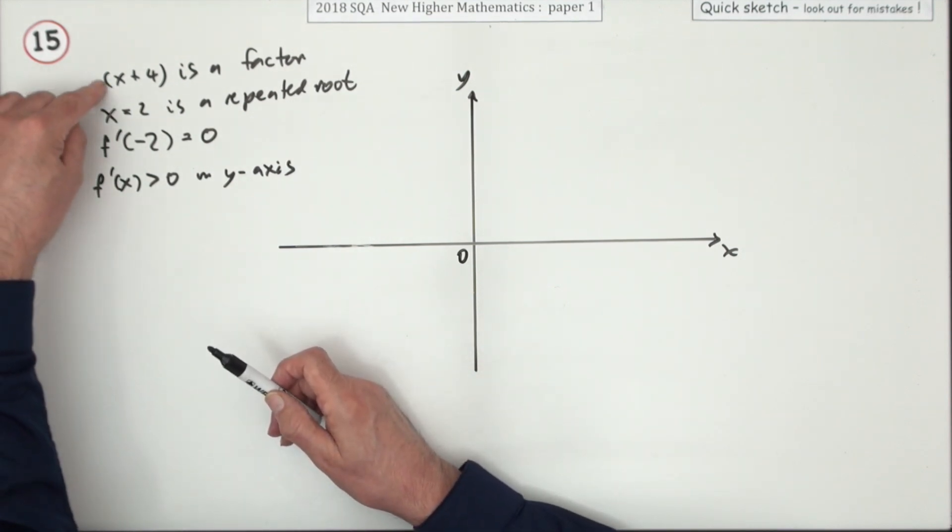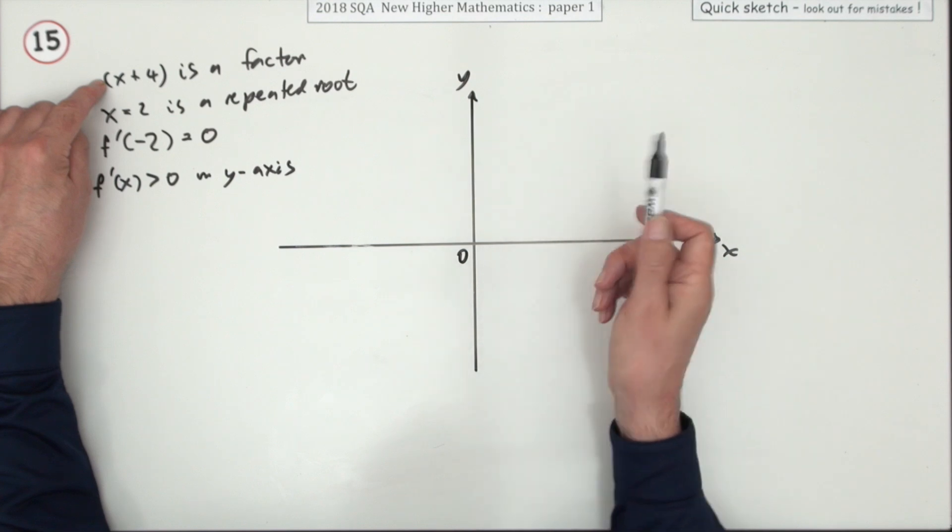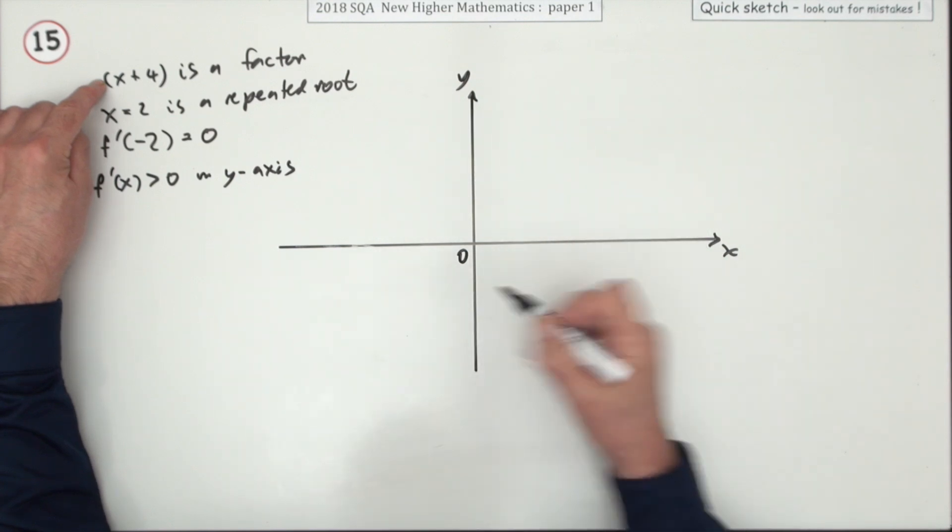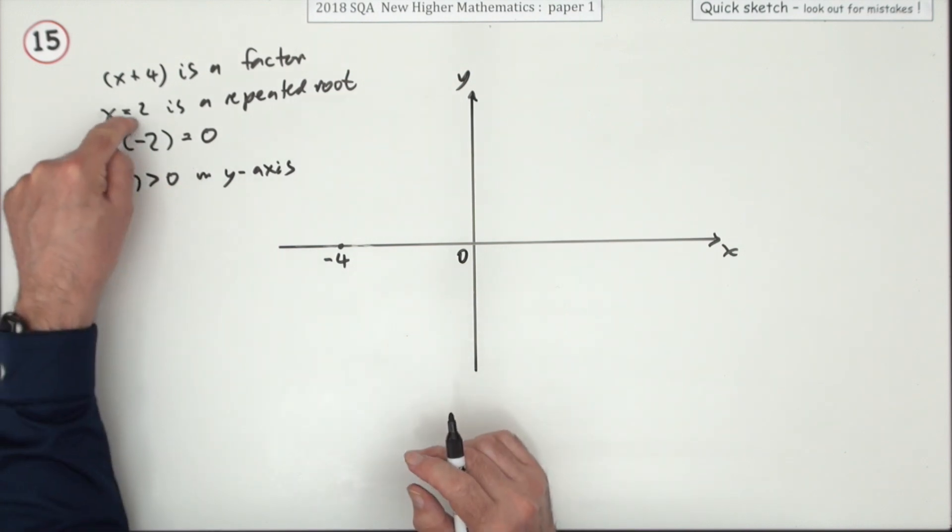x plus four is a factor. So if you were solving that equal to zero to find where it cuts the x-axis, that means x equals negative four would be a zero there.